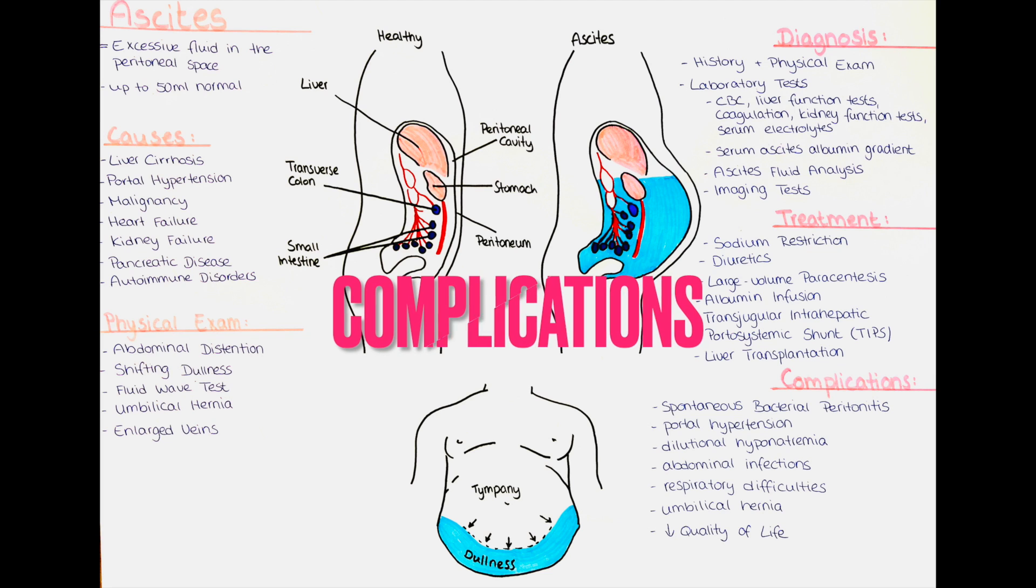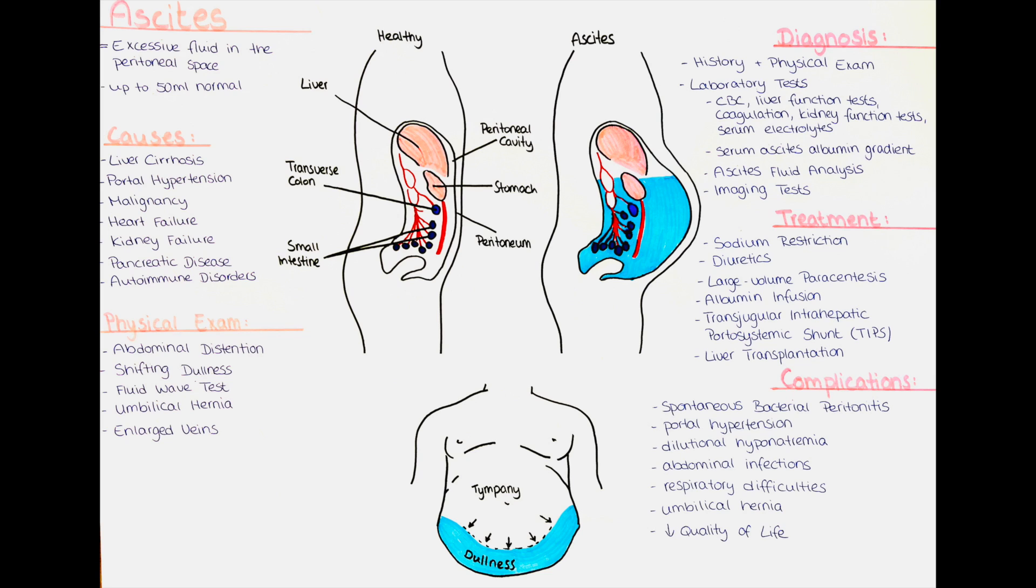What are complications of ascites? Ascites, if left untreated or poorly managed, can lead to several complications. These complications may arise due to the underlying cause of ascites or the effects of the accumulated fluid in the abdominal cavity.